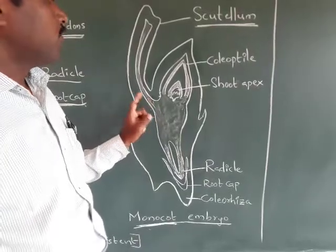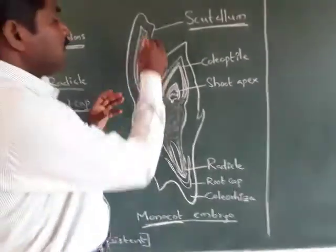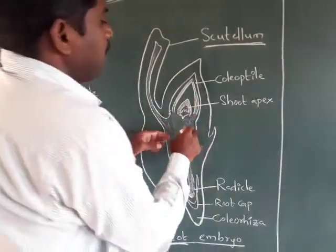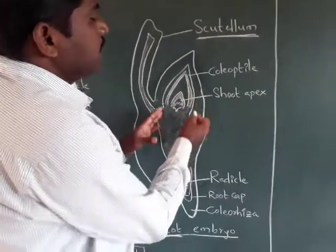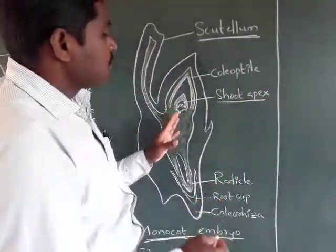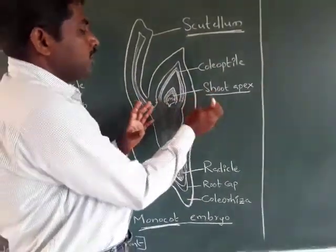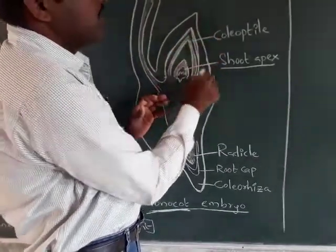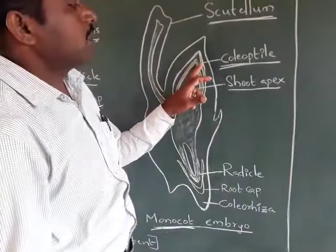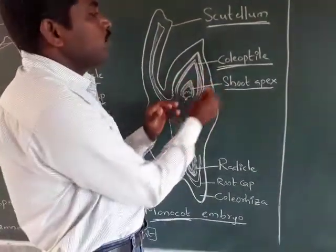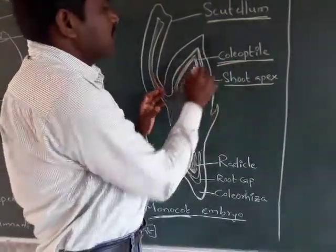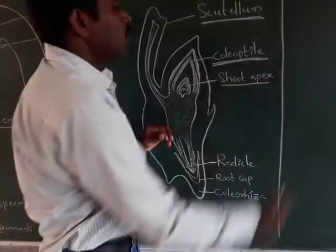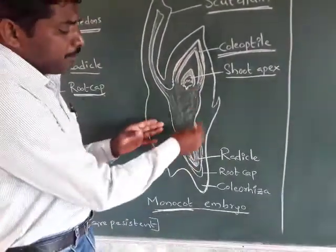Below the portion of the scutellum, there is an epicotyl which contains the shoot apex and a few leaf primordia. These are enclosed by a hollow sheath called the coleoptile, which is a foliar sheath.